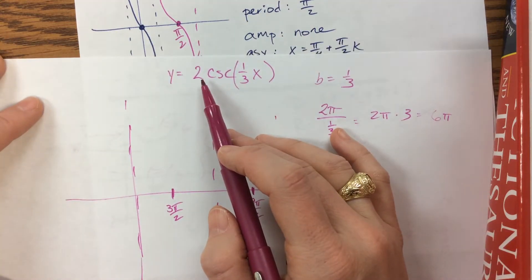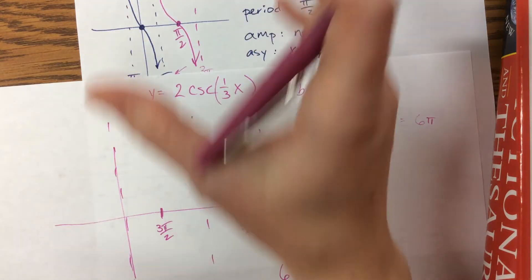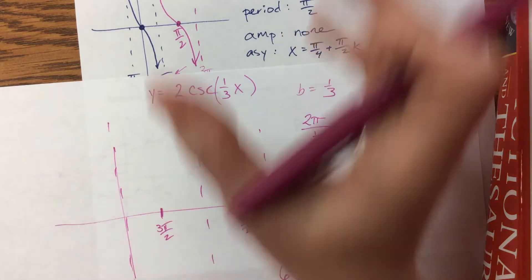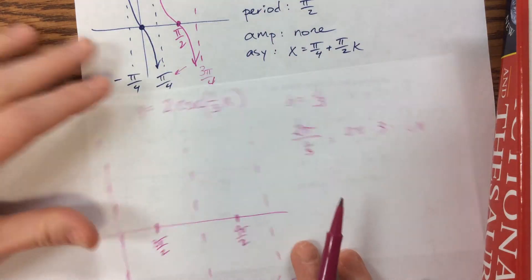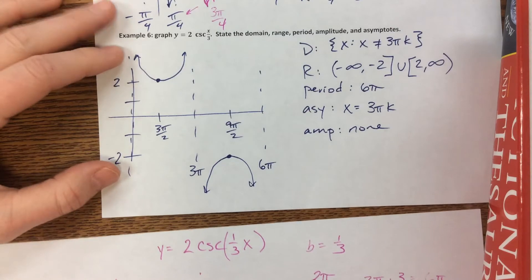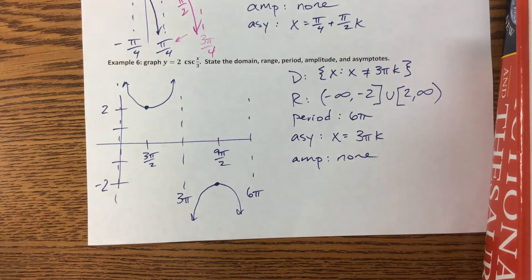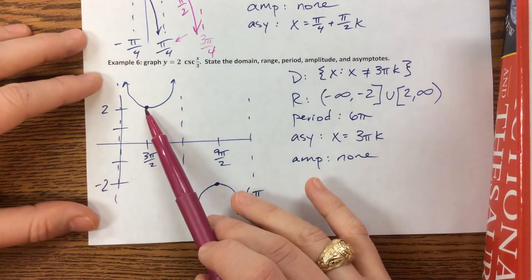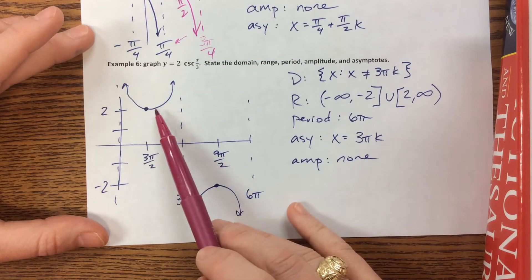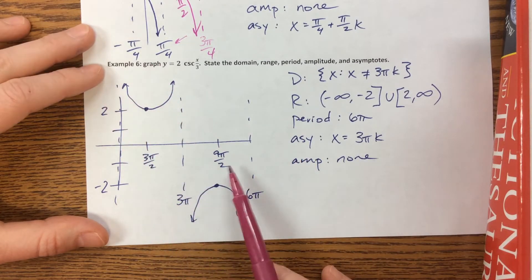And now the 2 is something where we have to mind the gap. It'll pull the ones that open up, up, and the ones that open down, down. And so we end up getting this graph right here, where we're sitting at 3π/2, 2, and opening up. And we're sitting at 9π/2, negative 2, and opening down.